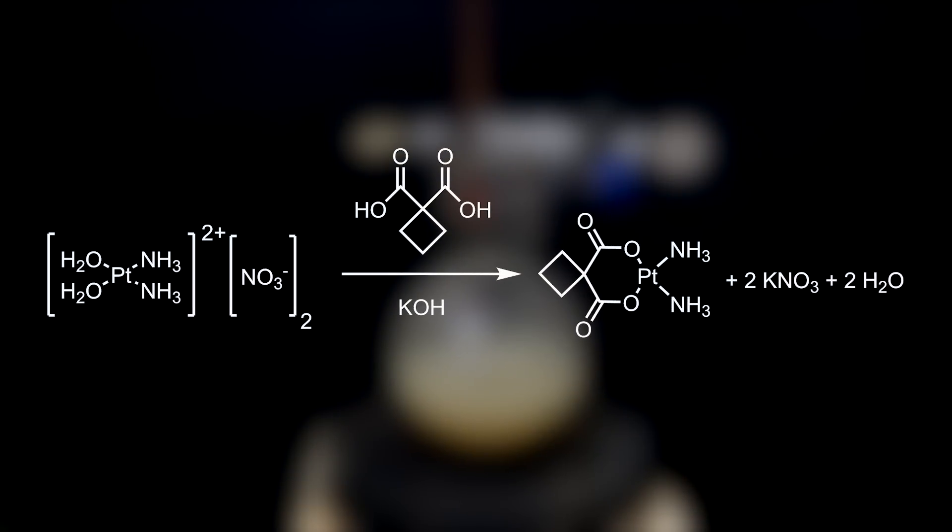In the reaction, the potassium hydroxide deprotonates the acid, forming water, and reacts with the nitrate ions to form potassium nitrate. The deprotonated acid then coordinates the platinum to form the final product, carboplatin.